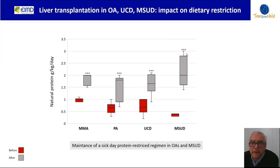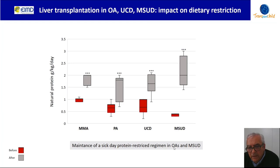Regarding the impact of transplantation on dietary restriction — which has a clear impact on quality of life — we were able to liberalize protein intake in all disease categories, while maintaining a sick-day protein-restricted regimen only for organic aciduria and MSUD, particularly in the days of fever or vomiting, recommending a return to protein restriction for one or two days.